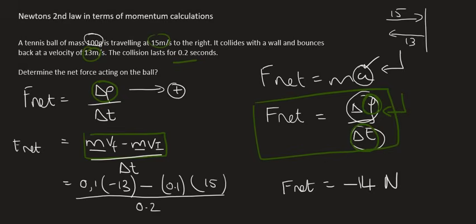Now the wall is obviously going to be acting to the left right, because it needs to cause the ball to move to the left eventually. So it's acting to the left. And so what we did in this question is we chose to the right as positive. And we got a negative answer.